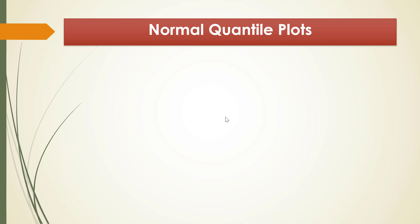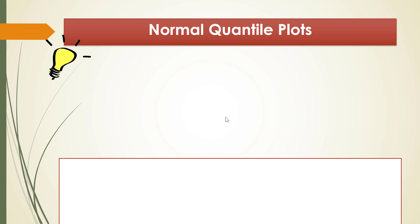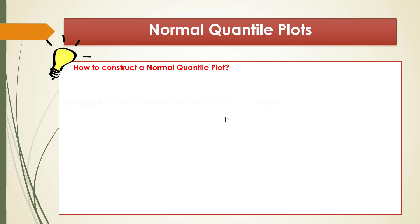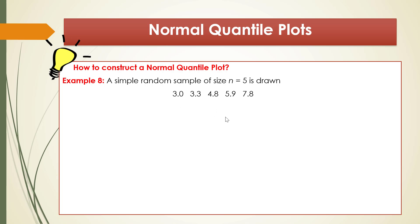Now we go to the last tool today: normal quantile plots. Compared to the other four plots, normal quantile plots are considered more complex because of how they are constructed. In topic 2, I showed you how to construct dot plots, box plots, stem-and-leaf plots, and histograms, but I didn't show you how to construct a normal quantile plot. So today, before I show you how to use normal quantile plots to assess normality, I will show you how to construct one. I'm going to start with a very small sample where n = 5: 3.0, 3.3, 4.8, 5.9, 7.8.